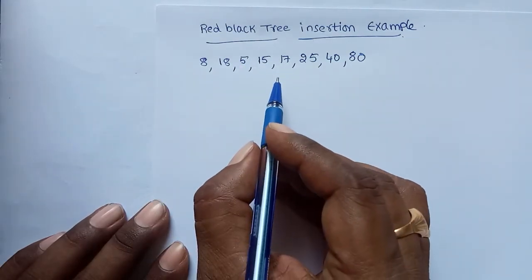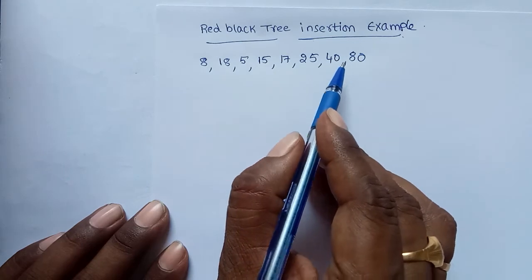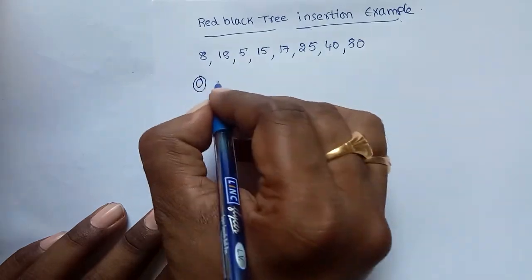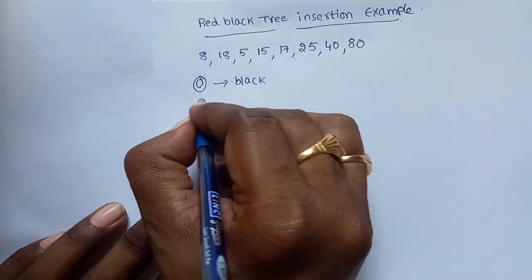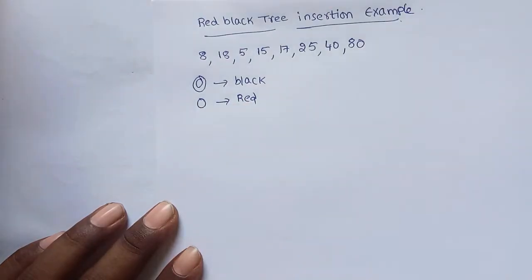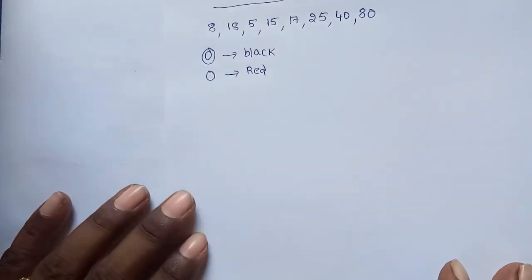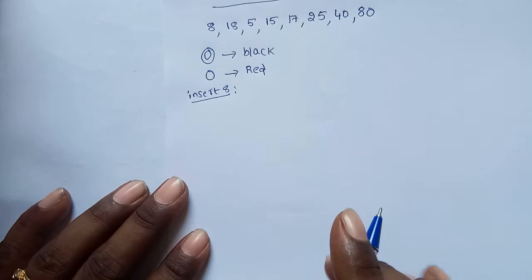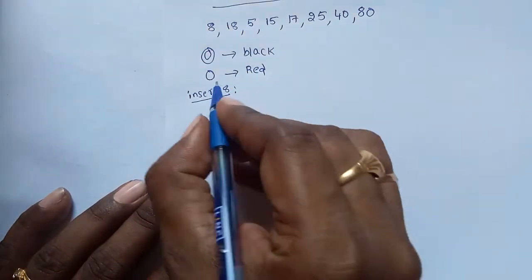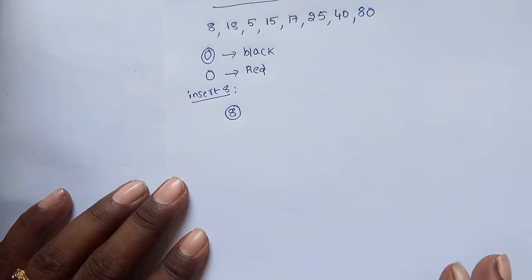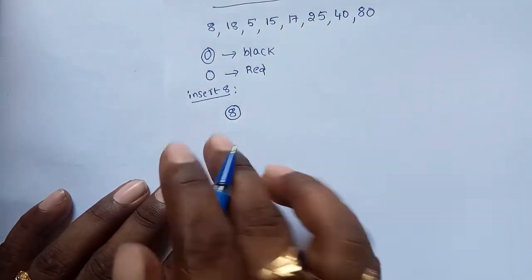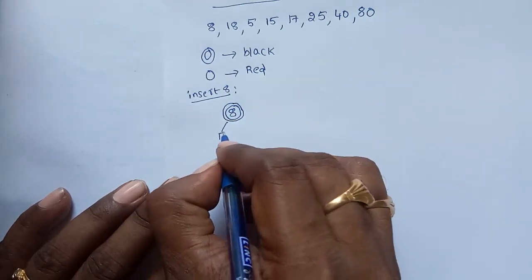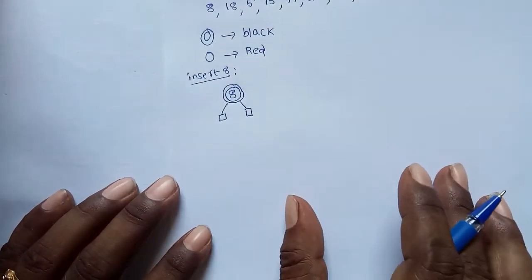Welcome to our channel. In this session we will discuss Red-Black tree insertion by considering an example. For simplification, a double circle is represented with black color and a single circle is represented with red color. First, insert 8. The inserted node is assumed as red color, but initially the tree is empty, so mark it as black color. These are the external nodes.